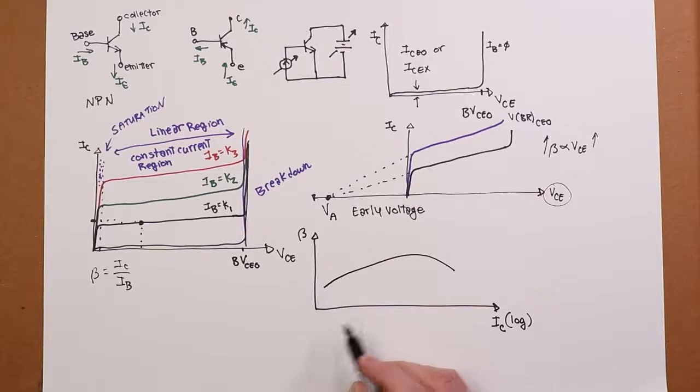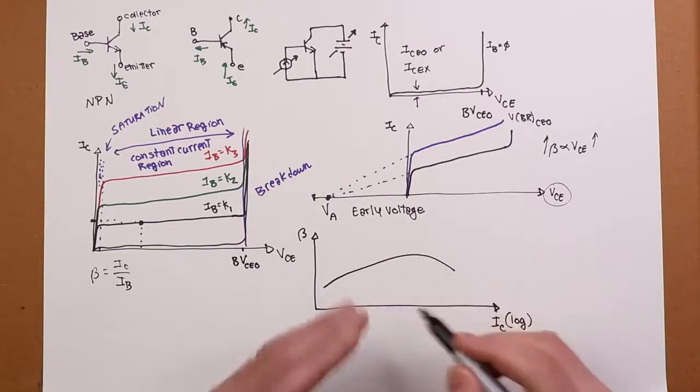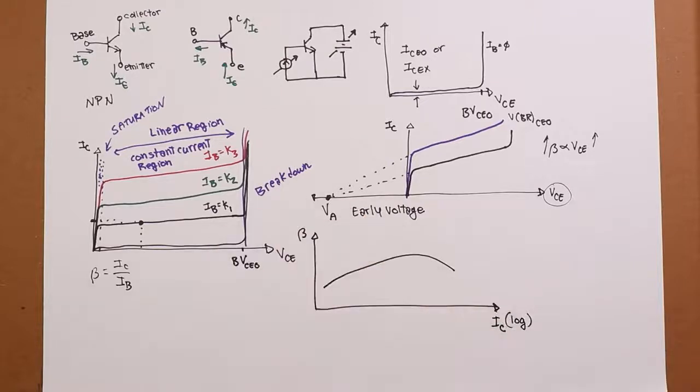All right. So, it's small down here at low currents. As current goes up, the beta would go up, until we hit some maximum value, then it starts to droop back down.